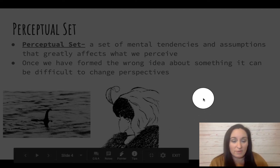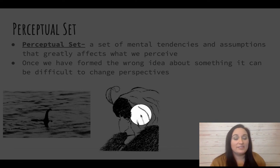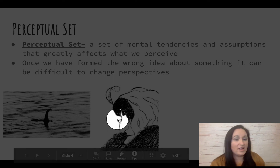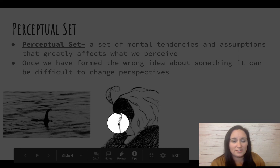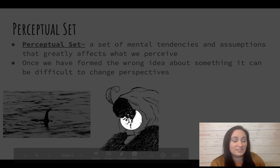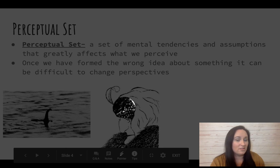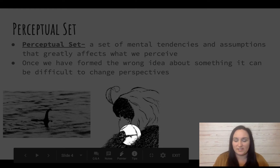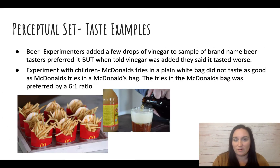The young woman is completely turned away. This is her neckline and jawline, this is her eyelash, and this little thing here is her nose. This would be her ear, this is the side of her hair, and this is like a necklace. So depending on which one you saw first, it's harder to see the other one. You can pause and look at it more if you'd like.